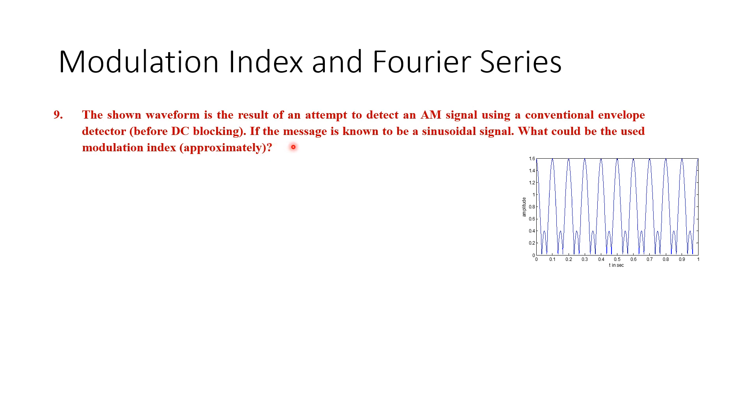But we have received the following. What could be the used modulation index? If the signal was to be received correctly, it would have been sinusoidal, but we have used a modulation index that resulted in the following. What is this modulation index? You can look at the numbers here. The answers: μ equal to 0.4, 1.4, 1.67, 2.16. You can pause the video, take three minutes to think about the question and choose your answer.